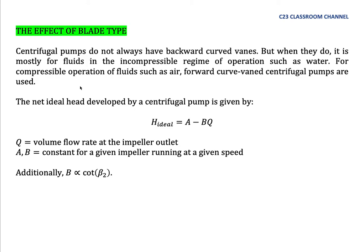The net ideal head developed by a centrifugal pump is given by H_ideal equals A minus BQ, where A and B are constants for a given impeller running at a given speed, and Q is the volume flow rate at the impeller outlet. Sometimes when you buy a pump, the manufacturer will give you this equation—the values of A and B—to represent the ideal pump head for that centrifugal pump.